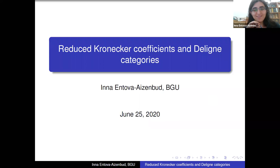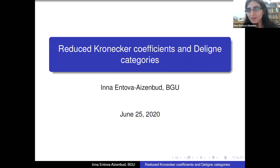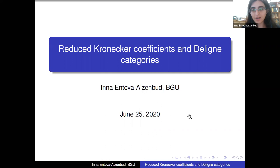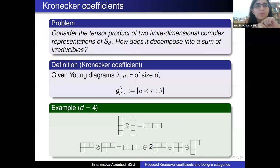Today I will talk about Kronecker coefficients and Deligne categories. This is a report on a reasonably old work of mine, but told from a slightly different perspective due to the advances in this field. I will start with the basic stuff. I apologize if it jumps too much.